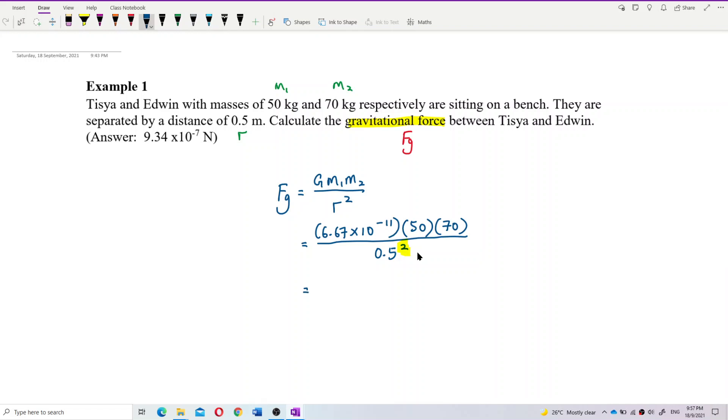The answer is 9.338, 9.338 exponent negative 7. So that's negative 7 newton. That's the answer. Is it correct? Yeah, 9.34 negative 7 newton. Now remember the unit, newton. That's the answer.